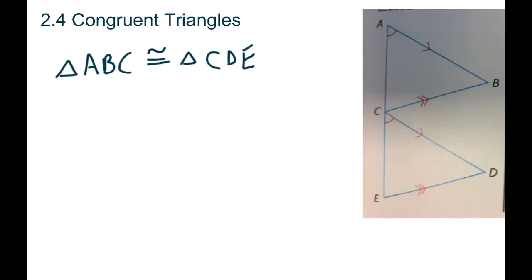Here we have angle A at the top with a little dash for the angle — that's the exact same as the angle where C is on the second triangle. Angle B, with a little dot, is the exact same as angle D. And angle C on the top triangle is the exact same as angle E on the bottom triangle. When you write these out, you've got to make sure you match the angles in the same order, so ABC exactly matches CDE for the second triangle.